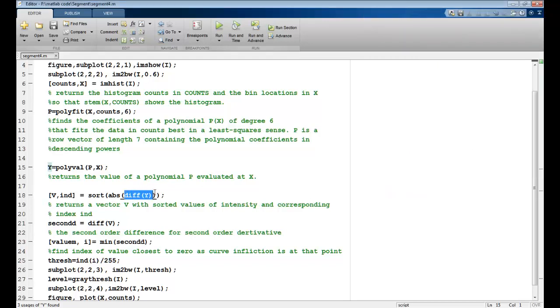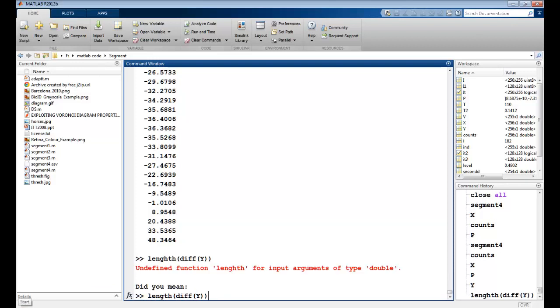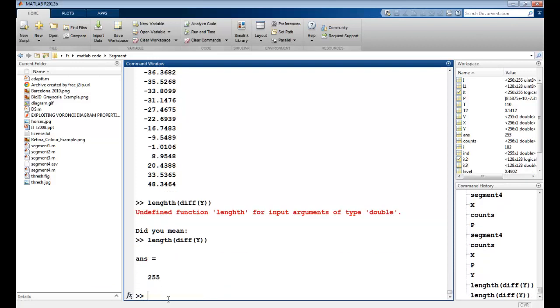So a one order differentiation would be difference between intermediate pixels. So I just take diffy which would basically find out the differences. So if I do diffy and you can see the length also. So my length is 255. So originally I had 256 values and now I am trying to find out the difference between intermediate pixels here. So that is why I have 255 pixels now.